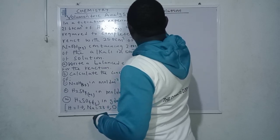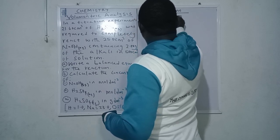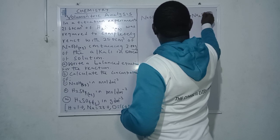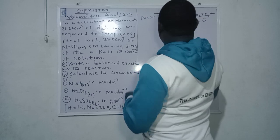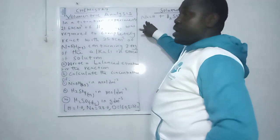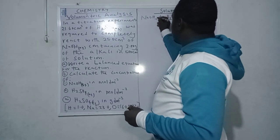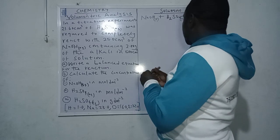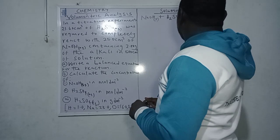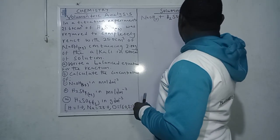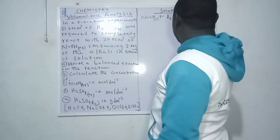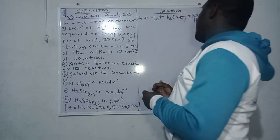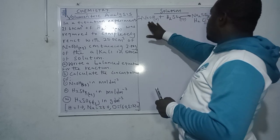So the reaction is: sodium hydroxide reacting with H₂SO₄ to give sodium sulfate and water. We can indicate their states. This is a salt and water, which makes it a neutralization reaction. Now we need to balance the equation. At a glance I can tell it's not balanced — I have two sodium on the product side, so let me balance the sodium quickly by placing a coefficient of 2 in front of NaOH. That balances the sodium.